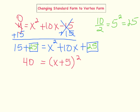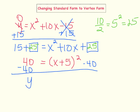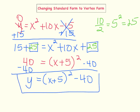We are very close to being done. In order to get this in the vertex form, though, I need to subtract 40 from each side. When I rewrite it, instead of putting 0, I'm going to put the y back in — because 40 minus 40 is 0. So now I'm going to replace that 0 with y and have y equals x plus 5 squared minus 40. This is the vertex form of a quadratic equation, where 5 represents the h value and negative 40 represents the k value. And if you remember, the h and k value represent the vertex of the quadratic equation.